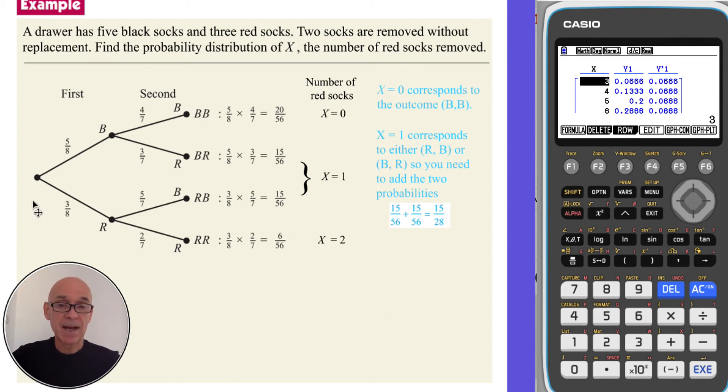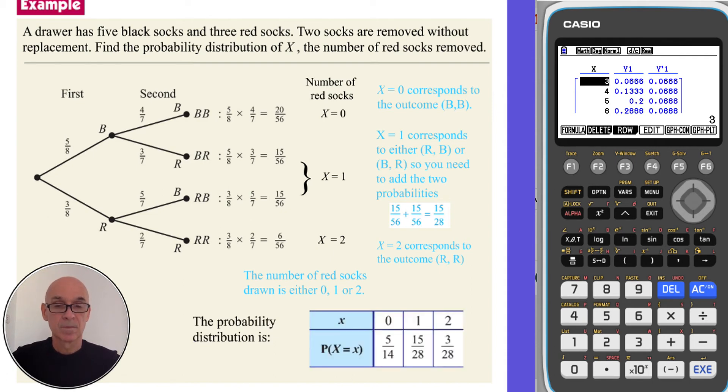So again, remember to add those two probabilities. And X equals 2, corresponding to taking two red socks. So as shown, X can have the values 0, 1, or 2. And the probability distribution is shown here.